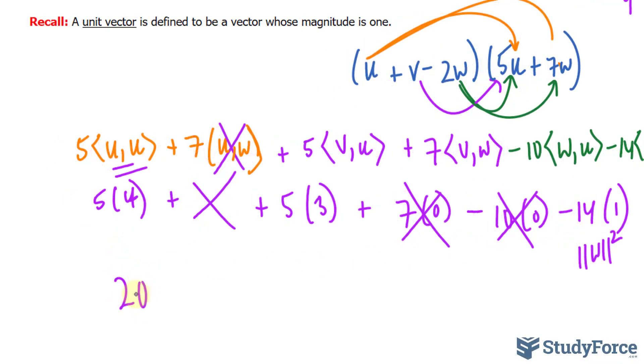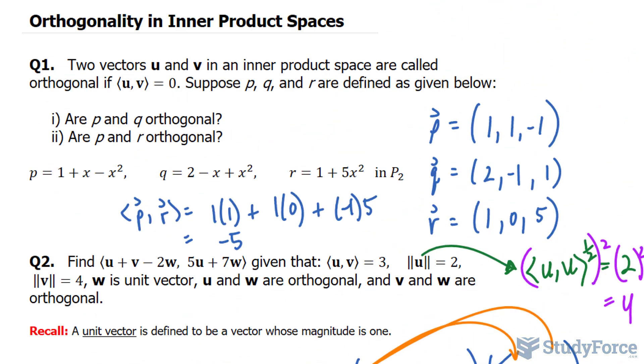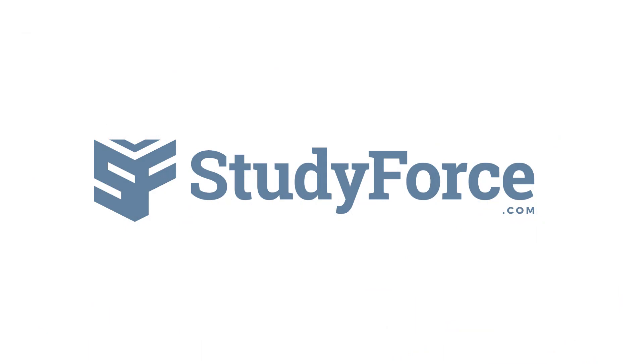So, if we calculate this correctly, we have 20 plus 15 minus 14 gives us positive 21. That's the answer to question number 2, and that is how to take into account orthogonality when calculating the inner product. Thank you.